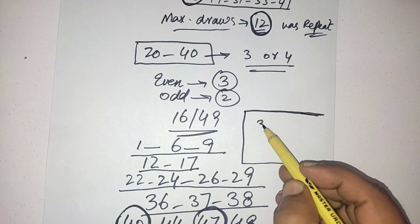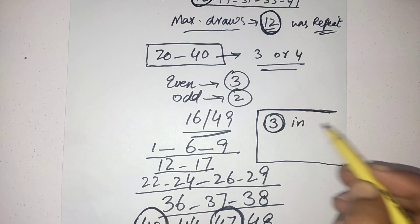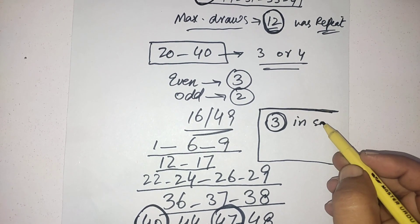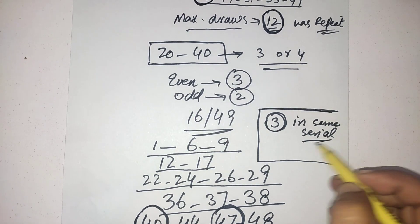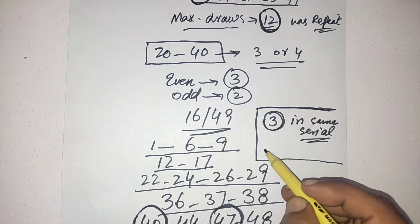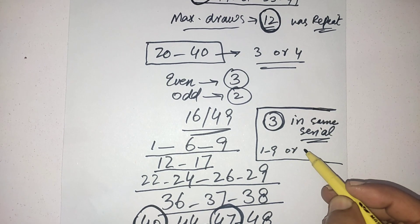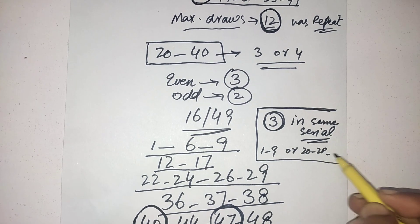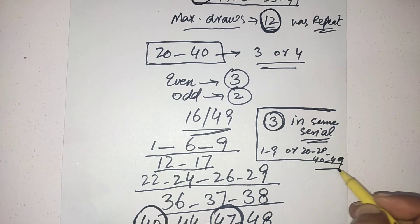Three numbers should come in same serial. Could be any from 1 to 9, or 20 to 29, or 40 to 49. These three serials.